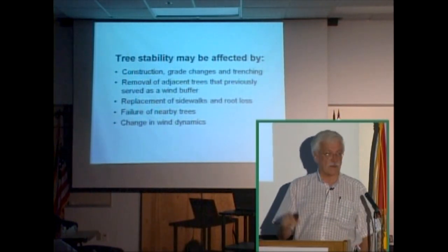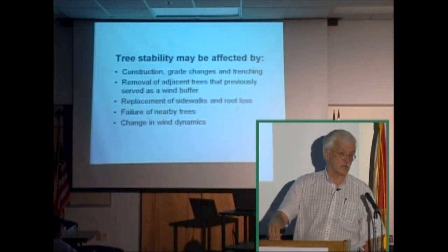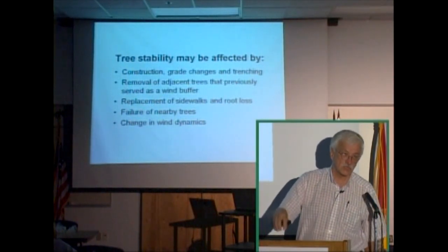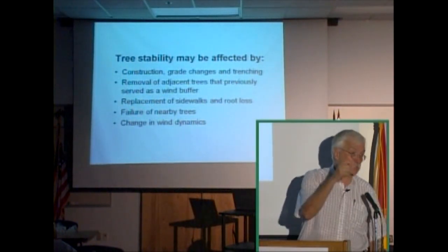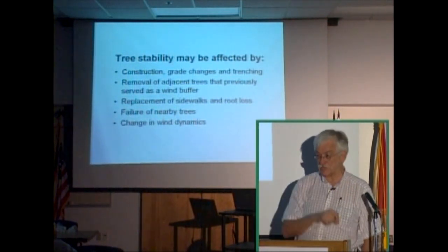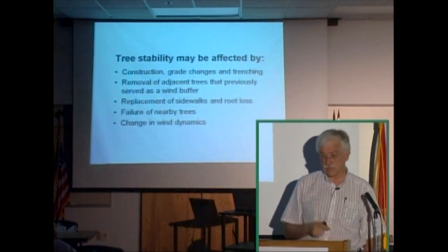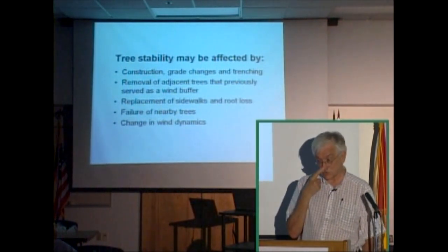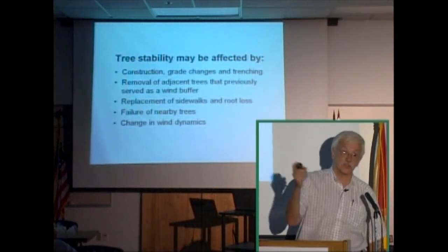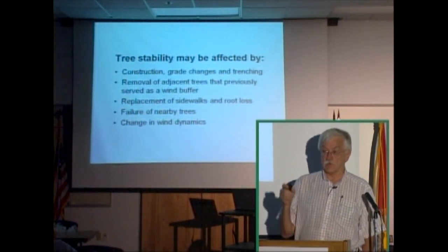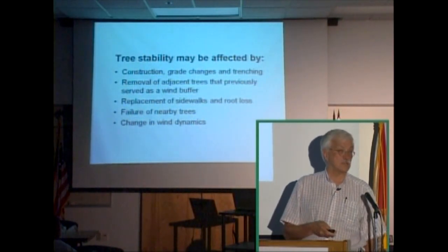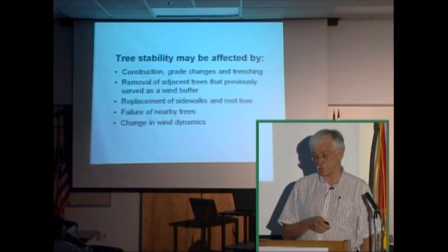Tree stability can be affected by many things. You could plant a perfect tree, but things can happen that will cause it to become less stable over time — construction nearby, grade changes, trenching near the tree that damages roots, removal of adjacent trees that previously served as a barrier, replacement of sidewalks causing root loss, failure of nearby trees, and changes in wind dynamics including increased wind speed from storms.